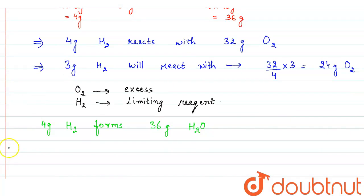Now we are given 3 gram. So 3 gram H2 will form 36/4 × 3, that will be equal to 27 gram H2O. So this is the required answer.